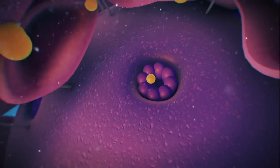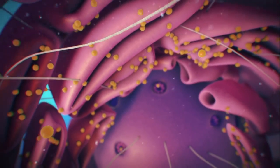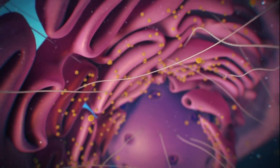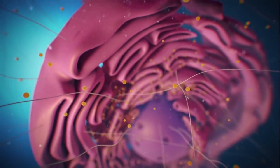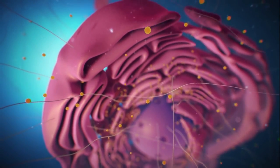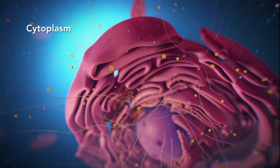After ribosomes leave the nucleus, they will have the important job of synthesizing or making proteins. Outside the nucleus, the ribosomes and the rest of the organelles float around in cytoplasm, which is the jelly-like substance.